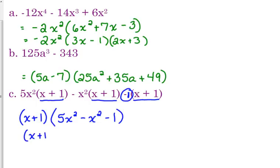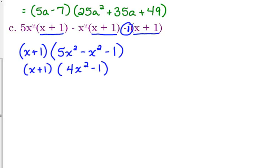Then we want to simplify. 5x squared minus x squared is 4x squared, and any time we're factoring, we need to ask ourselves, is that factored fully? Can I do something else?